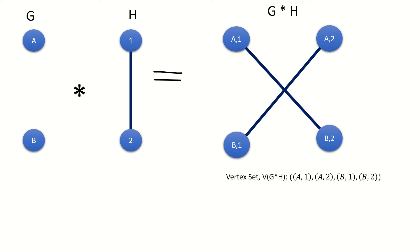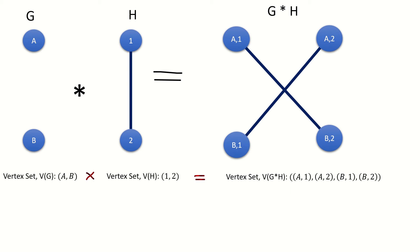The vertex set of the conormal product graph is the Cartesian product of the vertex sets of the factor graphs. In other words, each vertex in the conormal product graph corresponds to and is labeled with a pair of vertices from graphs G and H, where the left entry in each pair is a vertex from graph G, and the right entry in each pair is a vertex from graph H.